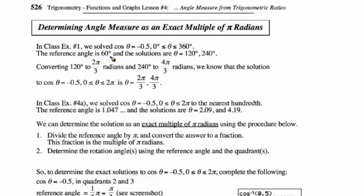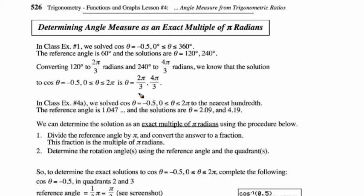If we convert 120 degrees to radians, we find that 120 degrees is equal to 2 pi over 3. Think of it this way: 2 times 180 degrees is 360, and 360 divided by 3 is 120. So these are equivalent. And then 240 degrees is 4 pi over 3 in radian measure. So the solution — which was 120 and 240 in degrees — is 2 pi over 3 and 4 pi over 3 in radians.